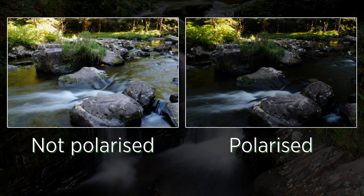A polarizing filter works best when you shoot at 90 degrees to the sun. That said, in the vast majority of situations the subject matter will not be at this optimal angle, but the polarizing filter will still do its job almost as well.